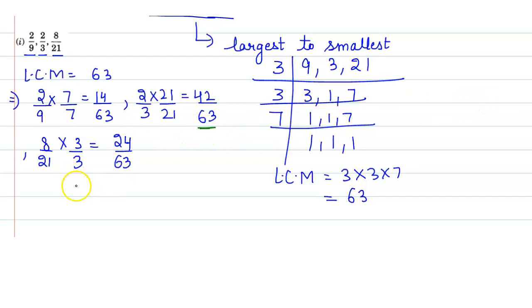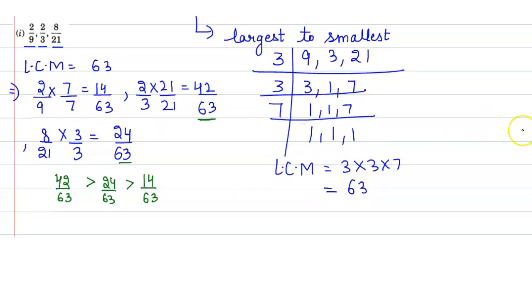So the largest one here is 42 upon 63. Then we have 24 upon 63. And the smallest one will be 14 upon 63.